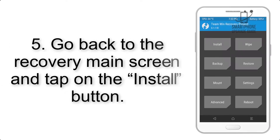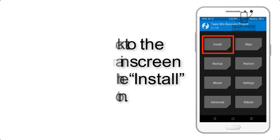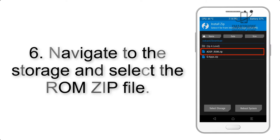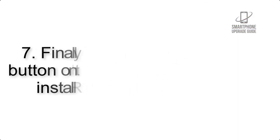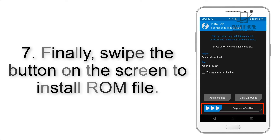Step 5: Go back to the recovery main screen and tap on the Install button. Step 6: Navigate to the storage and select the ROM zip file. Step 7: Finally, swipe the button on the screen to install the ROM file.